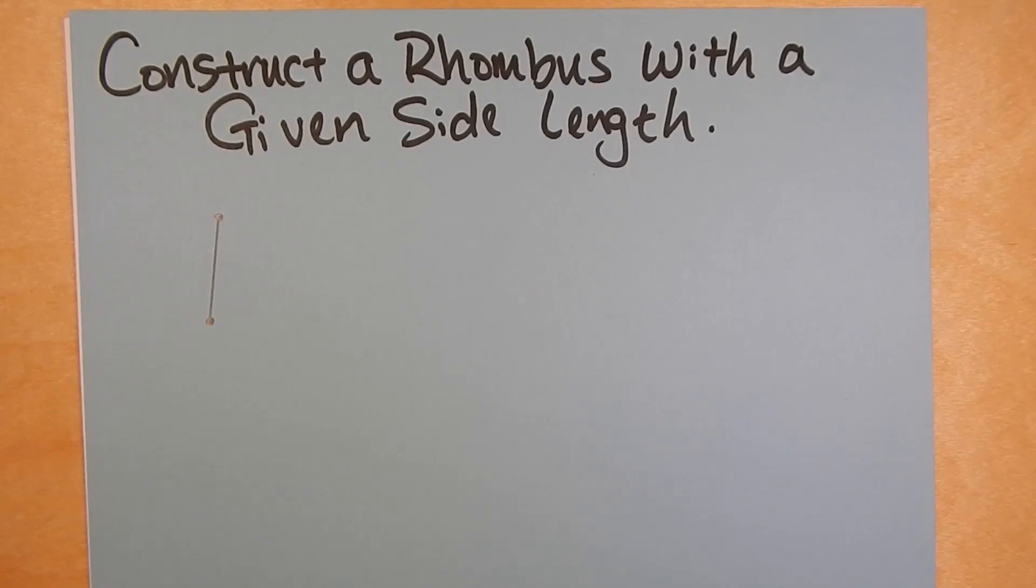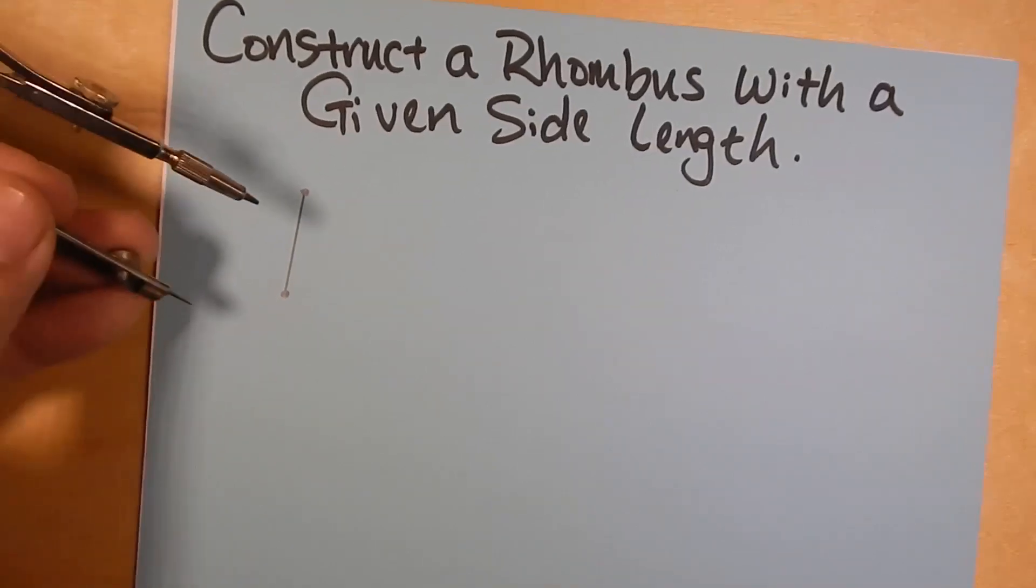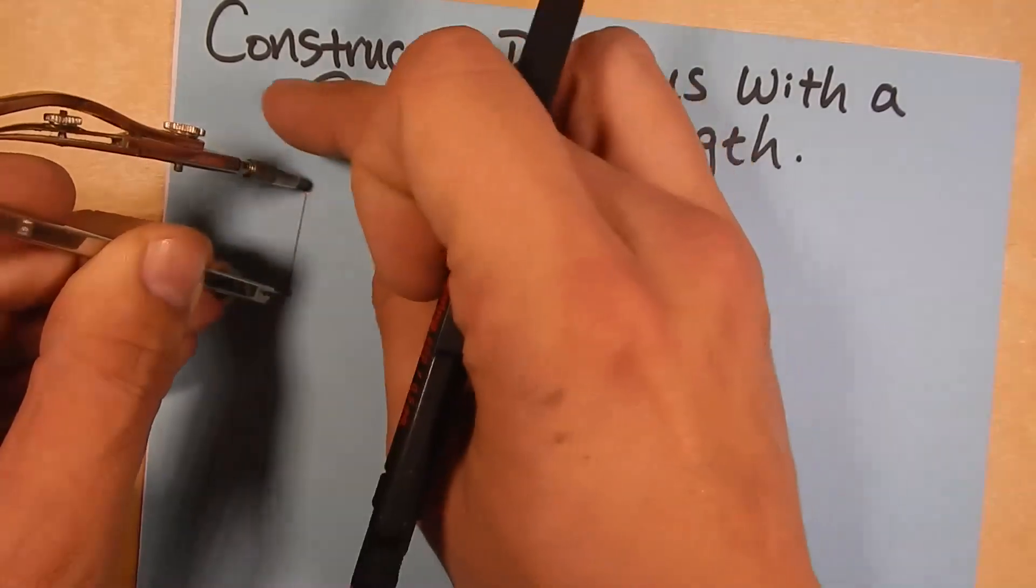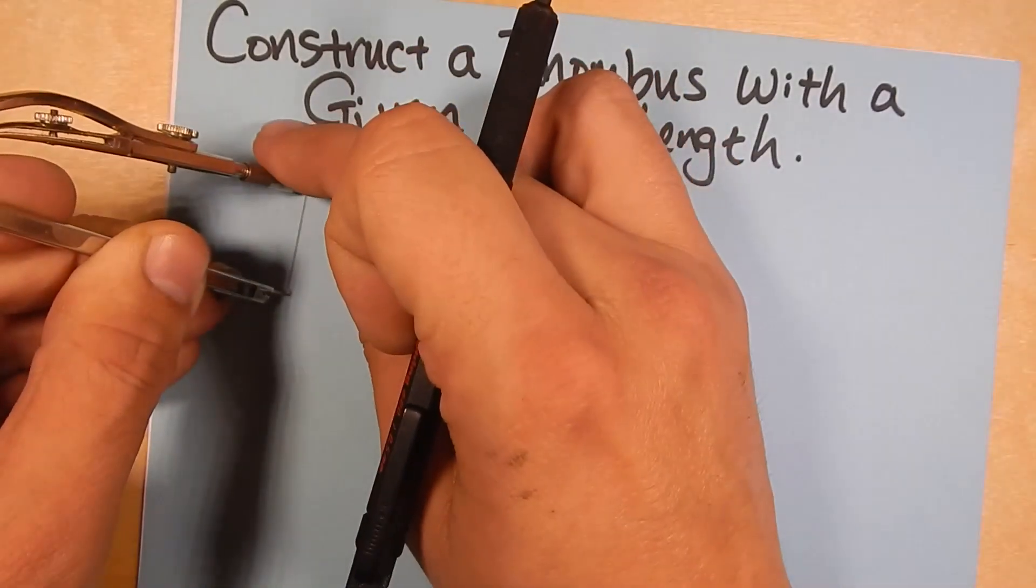So the first thing that we're going to do is we have to use the side length. Now sometimes when these problems are given, they tell you to use a given side length but you can't use the given segment.